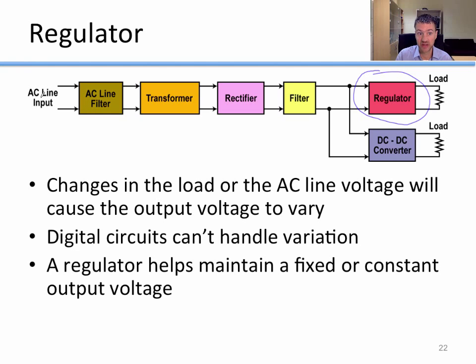Your AC line input might vary a little bit. If you have an AC input of 230 instead of 240, that will result in a lower DC output here, which would potentially cause problems for your digital logic. So we put in a device called a regulator to handle that ripple and handle minor voltage drops and gains. A regulator will help maintain a fixed constant output voltage.